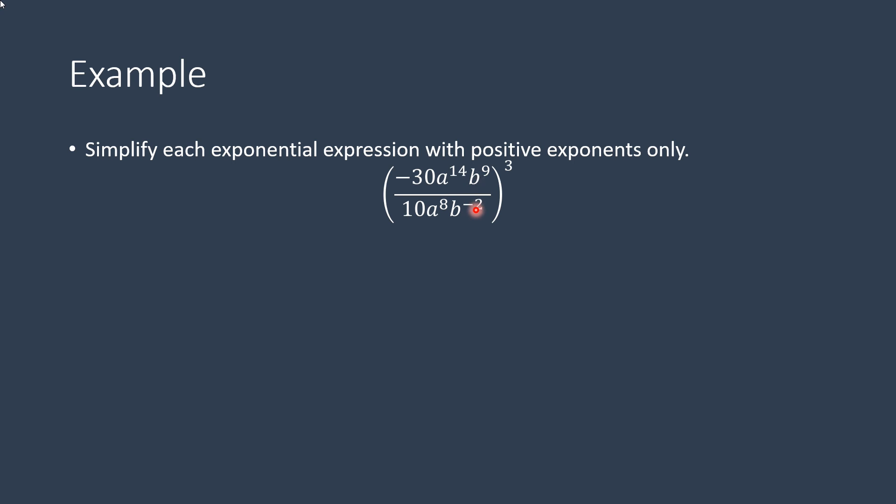You're going to do the same thing with the b's. That's b to the 9th over b to the negative 2, but be careful of your signs, because you're going to do 9 minus negative 2, which is 11.